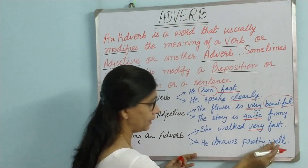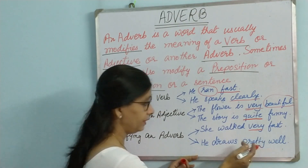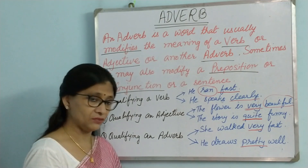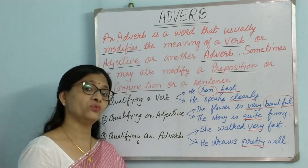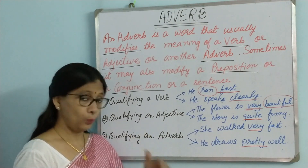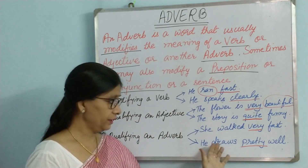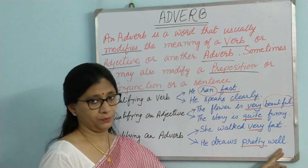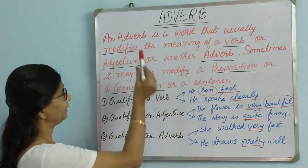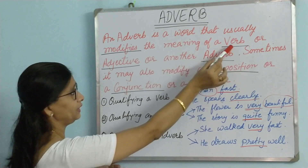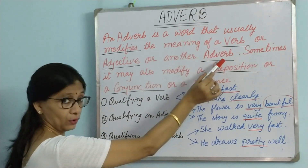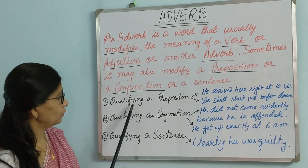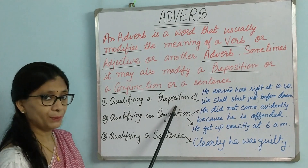Another example: 'She draws pretty well.' Here, 'well' is an adverb and 'pretty' is also an adverb. 'Pretty' is qualifying 'well' — 'He draws well' could also have been a complete sentence, but 'he draws pretty well' means he draws very well, adding more power to 'well.' So this adverb 'pretty' is qualifying the adverb 'well.' In these sentences, we see that an adverb can qualify a verb, an adjective, or another adverb.